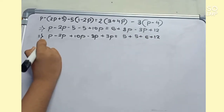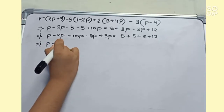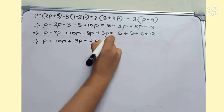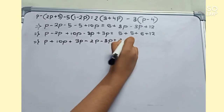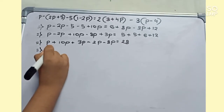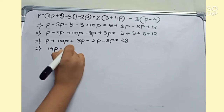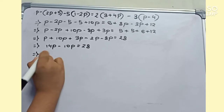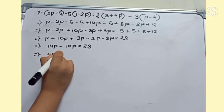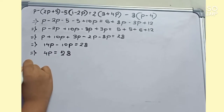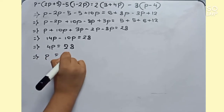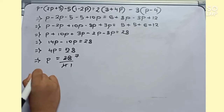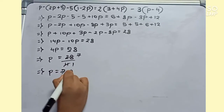We will now add like terms: 10P plus 3P minus 2P minus 8P equals 28 plus 2, which gives 14P minus 10P equals 28. This becomes 4P equals 28, so P equals 28 divided by 4, which simplifies to P equals 7. This is our final answer.